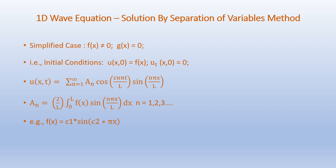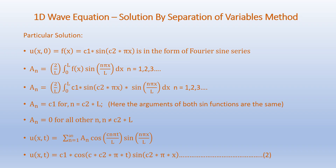As an example, consider F of X equals C1 times sin(C2·π·X), so the initial condition U is a sine function. Then U at (X, 0) equals F of X equals C1·sin(C2·π·X), which is in the form of a Fourier sine series. Accordingly, An equals 2 over L times the integral from 0 to L of F of X times sin(nπX/L) dx. When we substitute F of X into the equation for An, we get An equals 2/L times the integral from 0 to L of C1·sin(C2·π·X)·sin(nπX/L) dx, for n equals 1, 2, 3, and so on.